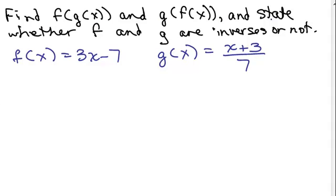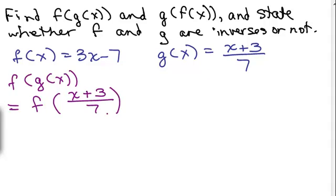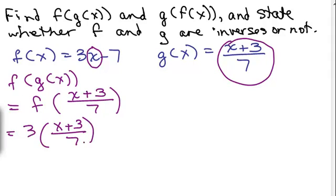Find f of g of x and g of f of x and state whether f and g are inverses or not. So first let's do f of g of x. So that's f of, now what am I putting in for g of x? x plus 3 over 7. And now I have to plug in x plus 3 over 7 in for my x in the f function. So that's 3 times x plus 3 over 7. That's what I'm plugging in for x minus 7.